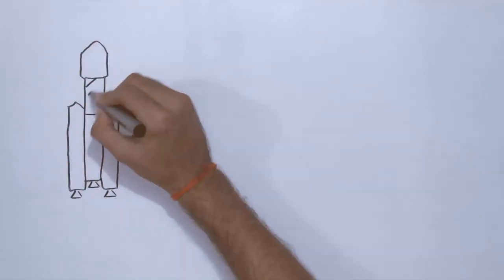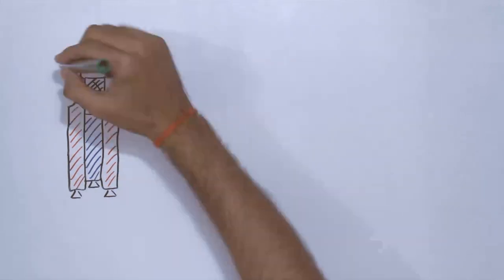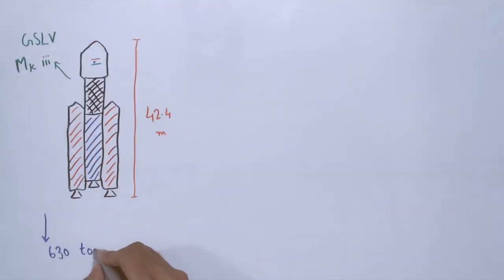The GSLV Mark III is designed as a three-stage vehicle with a height of 42.4 meters and a lift-off mass of 630 tons.